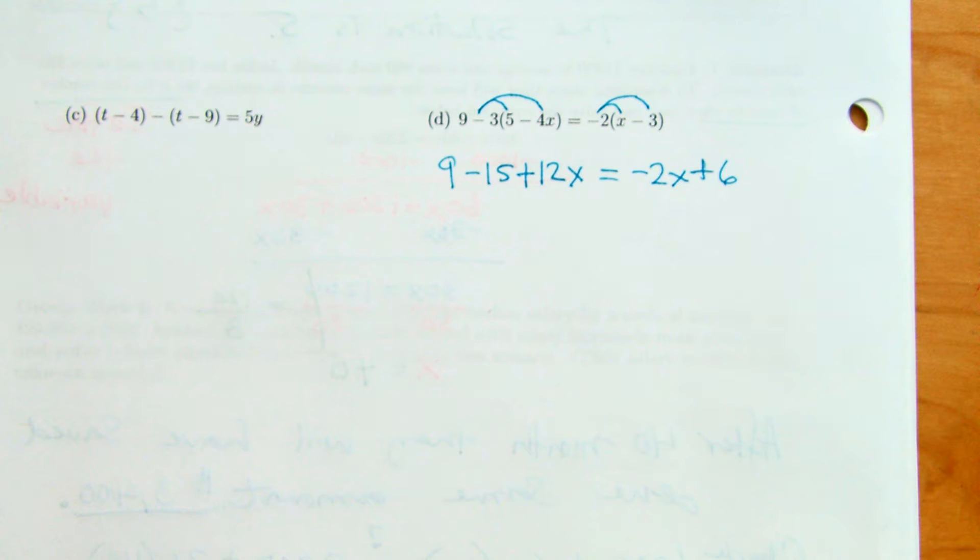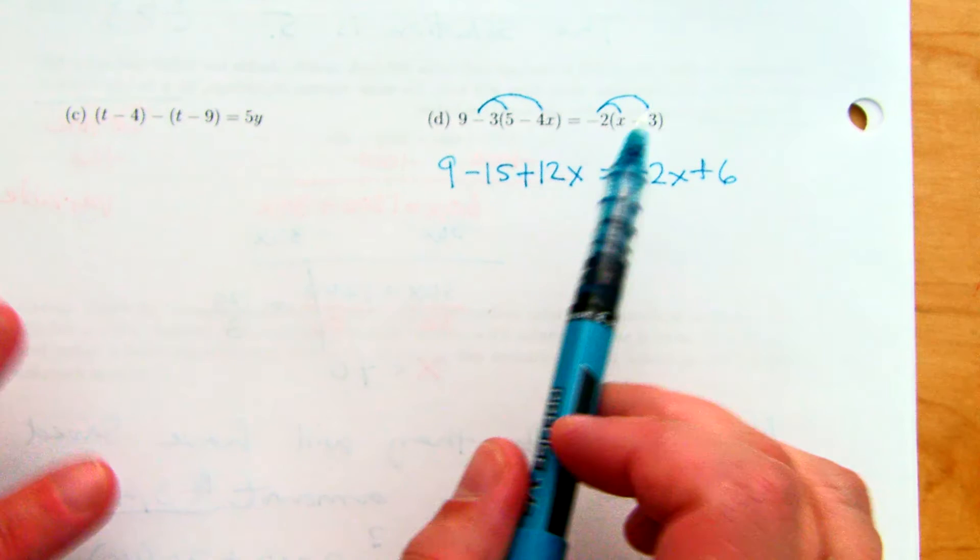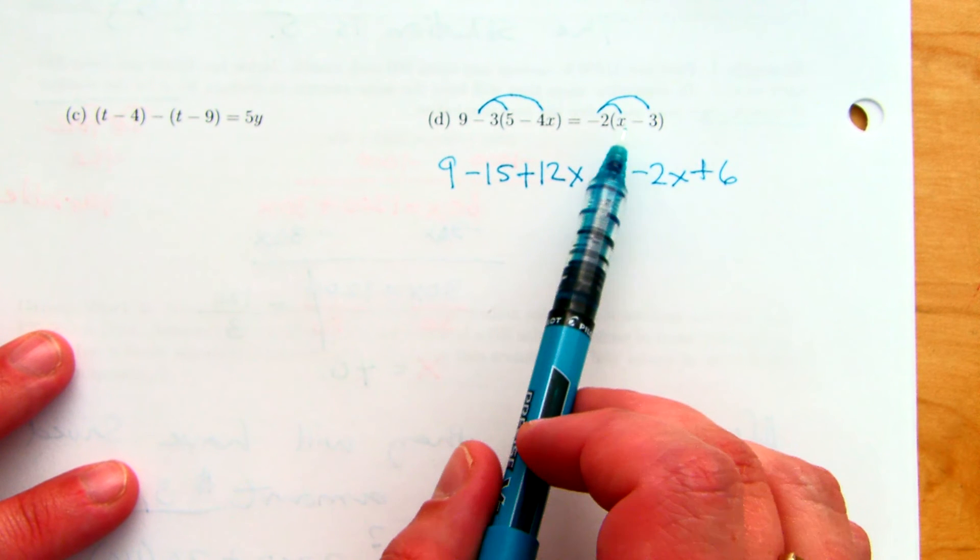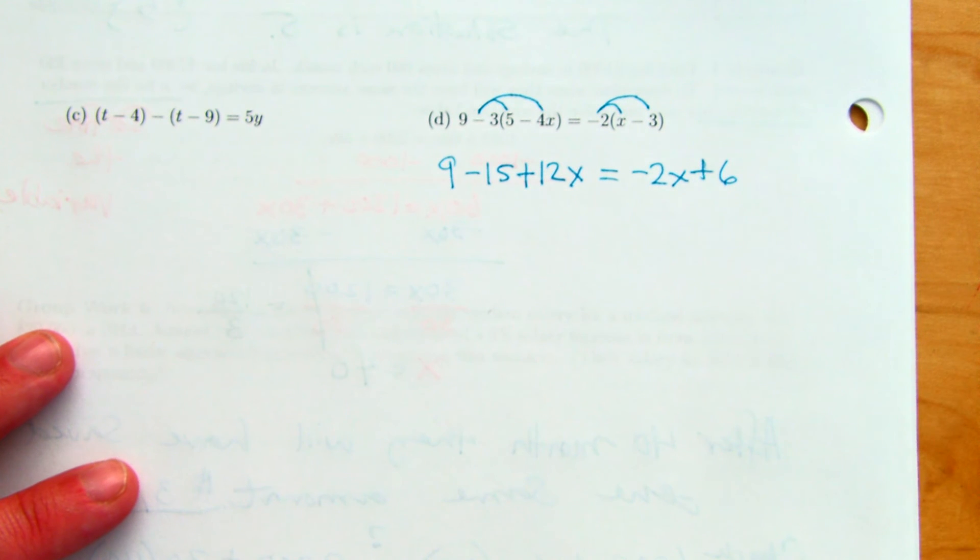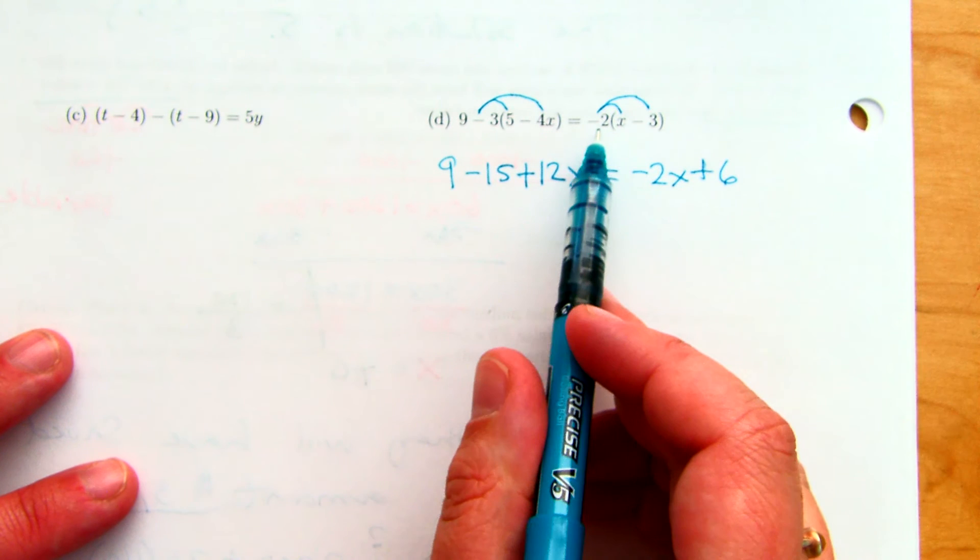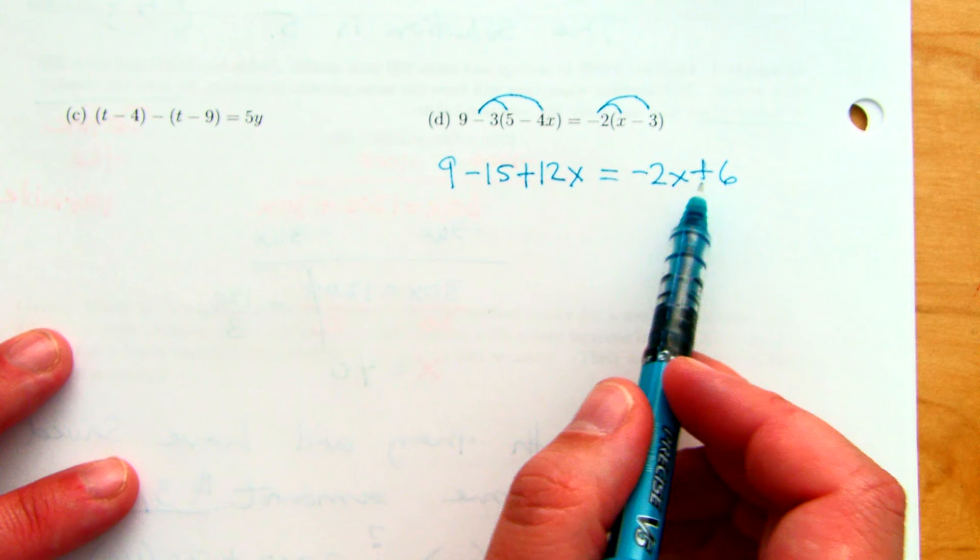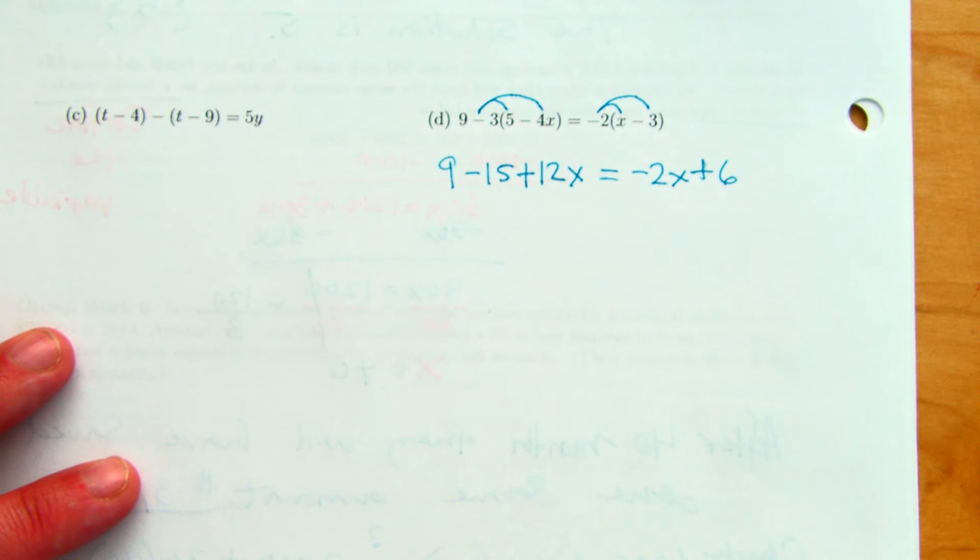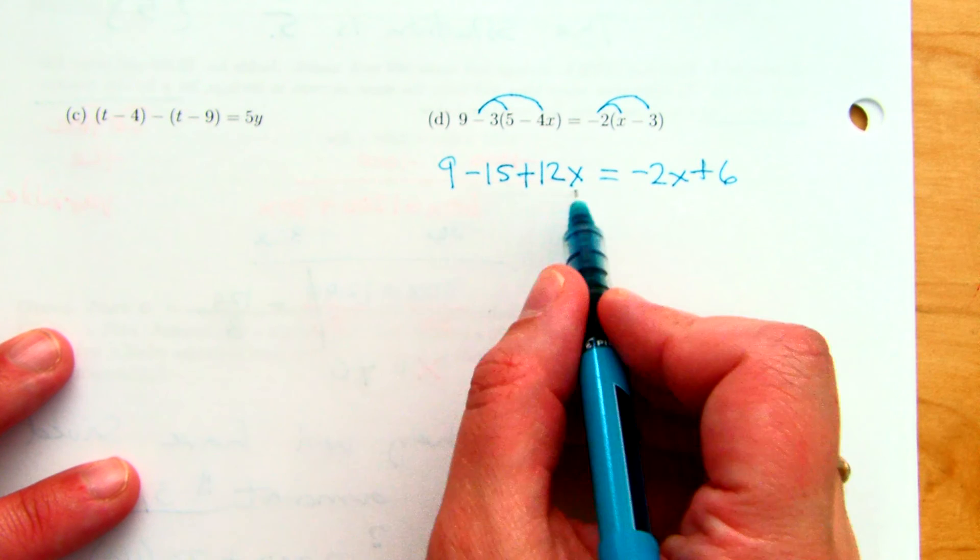Negative 2x. And then, what would be our constant? Plus 6. That's because you have the negative times the negative. If you get the wrong signs, it will mess up your entire problem, which is the reason why we have to check. When we check, we're always going to go back to the original problem to check it in. We're not going to check it in any of our simplified steps, even though it would be easier. But we could have made a mistake from one line to the other.